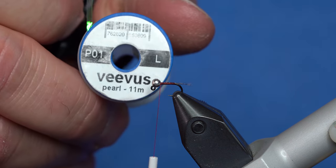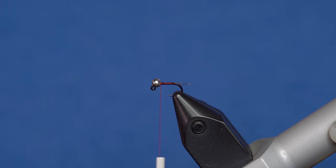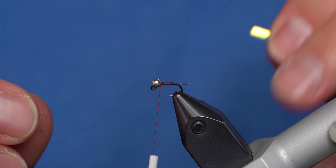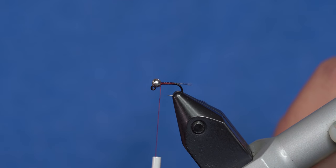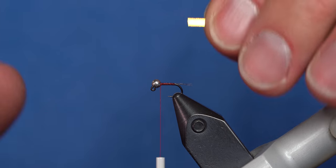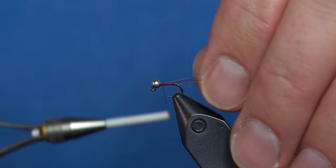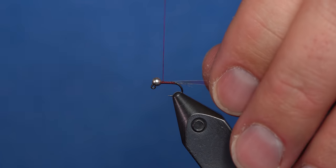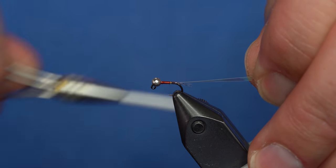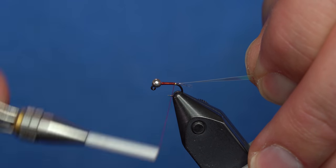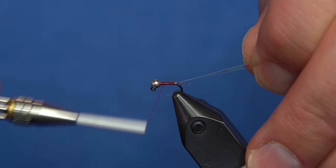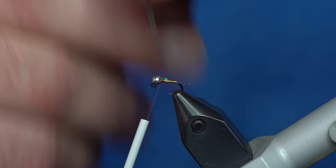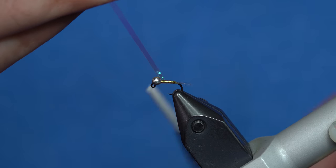Next we're going to take some large Vivas tinsel. You can do this with medium if you'd like to, especially if you start getting smaller than this, a 20 or 22, you might want to downsize the tinsel. But for the bigger sizes, I really like the large tinsel. So I'm going to capture it right behind the bead, wrap down the shank until we get to the tail, wrap back up to the bead. We're going to wrap the tinsel over the top of the red thread, right up to the bead, like so.